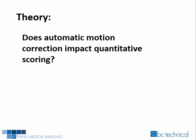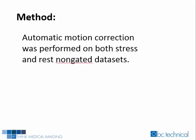Does patient motion corrected by automatic motion correction algorithms impact quantitative scoring? 18 patients totaling 36 non-gated cardiac SPECT studies with patient motion were used as data to investigate whether automatic motion correction had any impact on summed stress scoring, summed rest scoring, and summed difference scoring on cardiac SPECT reconstructed data. Both motion-corrected and non-motion-corrected datasets were reconstructed using identical parameters, then processed with CEDARS quantitative perfusion software for scoring. Results were displayed on an Excel worksheet to identify any trends.